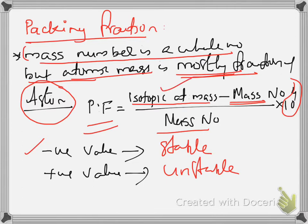If there is a difference between isotopic mass and mass number, or if the real experimental atomic mass is less than the number of protons and neutrons, we can see there is a kind of mass loss during the formation of the nucleus. That mass loss may be converted to an equivalent amount of energy, and using that energy, the nucleus is that much more stable.